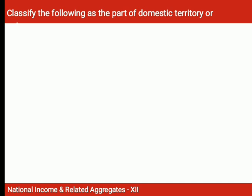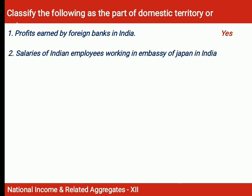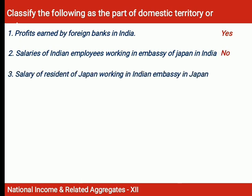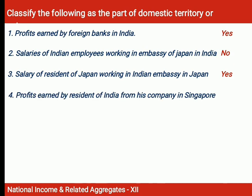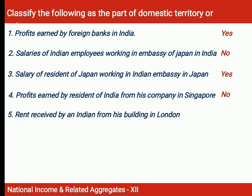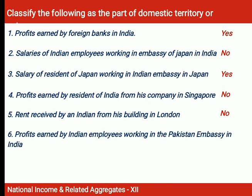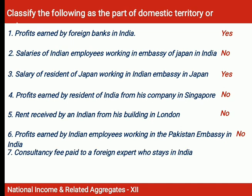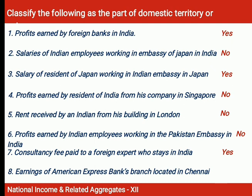Classify the following as part of domestic territory or not: Profit earned by a foreign bank in India — Yes, part of domestic territory. Salary of an Indian employee working in the Japanese Ambassador's office in India — No. Salary of a resident of Japan working in the Indian Embassy in Japan — Yes, because it is part of the domestic territory of India. Profit earned by a resident of India from a company in Singapore — No. Rent received by an Indian from a building in London — No, it is part of London's domestic territory. Profit earned by an Indian employee working in the Pakistan Embassy in India — No. Consultancy fees paid to a foreign expert staying in India — Yes, included in India's domestic income. Earnings of American Express Bank branch in Chennai — Yes, part of domestic territory of India.